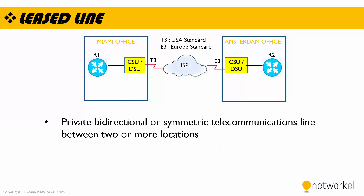Now let's take a look at WAN technologies. The first technology is leased line. In a leased line we have a private bi-directional or symmetric telecommunication line between two or more locations. We use the T3 standard for the USA and the E3 standard for Europe. This technology is used for telephone, data, or internet services. Leased line provides high quality, availability, and a dedicated link, but because it is expensive it is not very popular anymore.